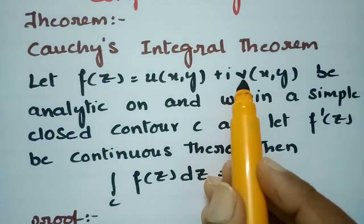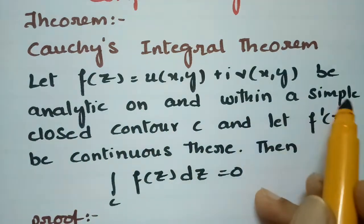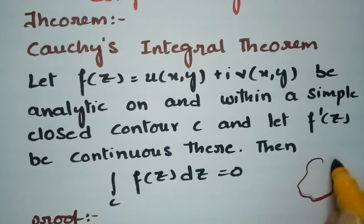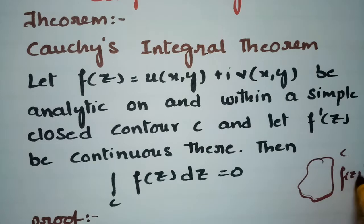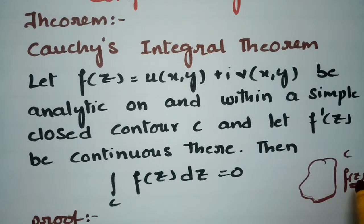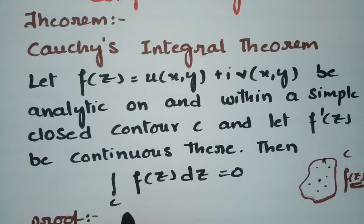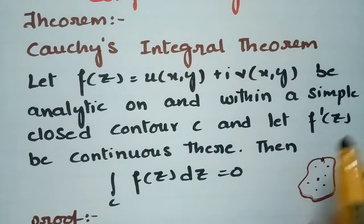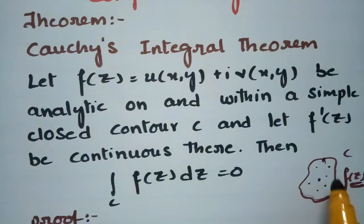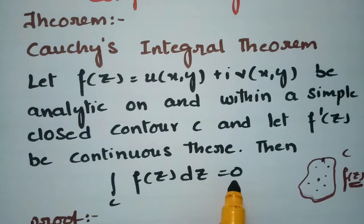What is given: f(z) is given as u + iv, and f(z) is analytic on and within a simple closed contour C — this is an irregular shape representing the contour C. f(z) is differentiable at every point on and within the contour. Also, f'(z) is continuous there. The condition we have to show is that the integral of f(z) dz equals 0.